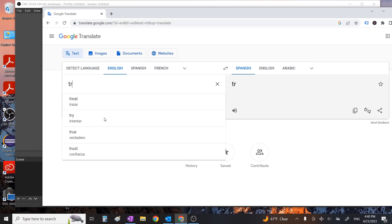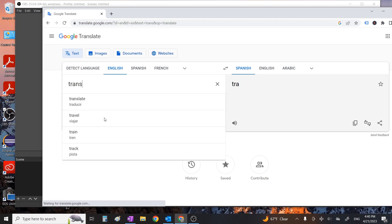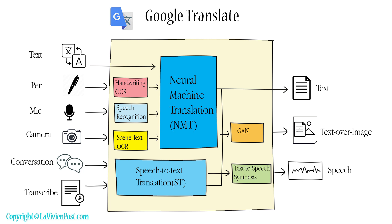Google Translate is an application to translate one language to another in real-time. It is powered by state-of-the-art AI technologies with neural networks.